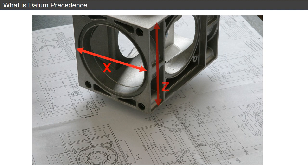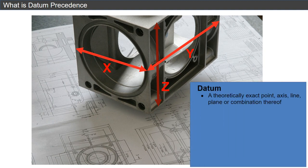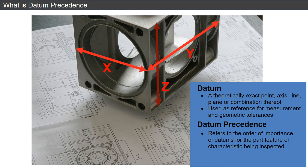Datum Precedents is a fundamental principle in the design and manufacture of mechanical parts and assemblies. It refers to the order of importance assigned to different datums, which are specific points, lines, or planes on a part, which are used as references for measurement and geometric tolerances. When designing a part, engineers must determine which datums are most critical to its function and then use them as the primary references for dimensioning and tolerancing.